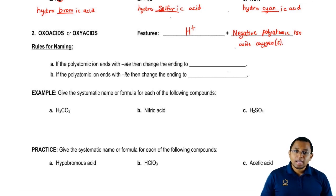So that's the defining characteristic of oxo or oxy acids. Here we have a polyatomic ion connected to our H+, that polyatomic ion has one or more oxygens present.